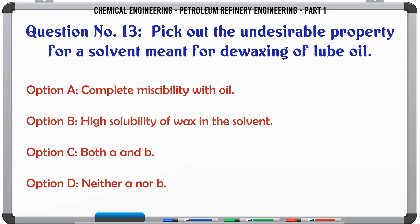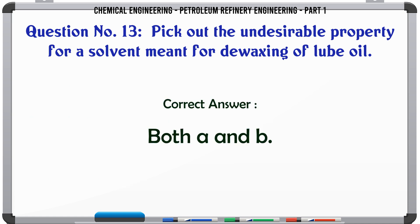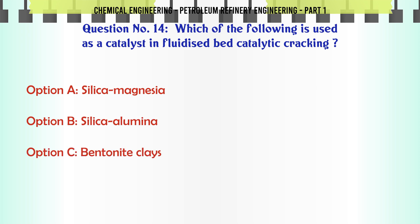Pick out the undesirable property for a solvent meant for the dewaxing of lube oil. A. Complete miscibility with oil, B. High solubility of wax in the solvent, C. Both A and B, D. Neither A nor B. The correct answer is Both A and B.